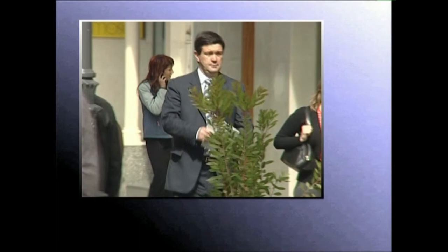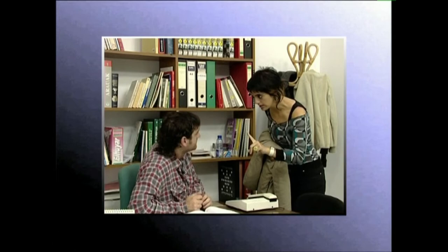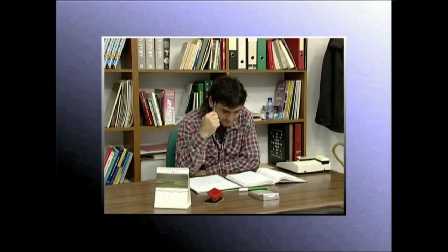Pertsonaiak mugitzen direnean edo ekintzaren ardatza aldatzen denean, zaila izaten da kuadro egokia aukeratzea. Normalena pertsonaiari jarraitzea edo interesgune berria enkuadratzea izaten da. Hori da logikak agintzen duena. Bietako konponbide bat aukeratu behar dugu: kuadroa ireki edo itxi. Eta zein dela ere aukeratu dugun konponbidea, dela panoramika, dela zooma, poliki-poliki egin behar dugu, aktoreak mugitzen ari diren bitartean. Horrela eginez gero, ikuslea ez da ohartu bideokameraren mugimenduaz, ekintzari dagokion mugimendua irudituko baitzaio.